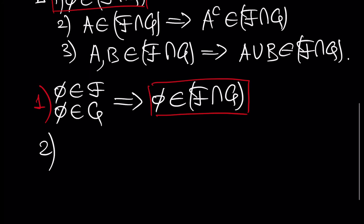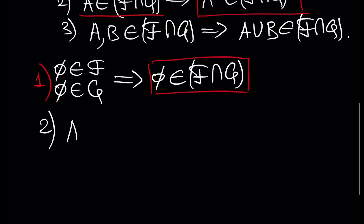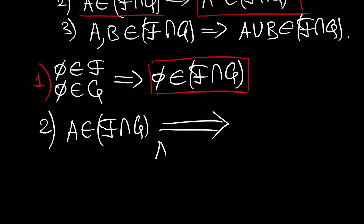Second part: let's show that if A is inside the intersection of F and G, then the complement of A is also inside the intersection of F and G. So if A is inside the intersection of F and G, it means that A is inside F and A is inside G.